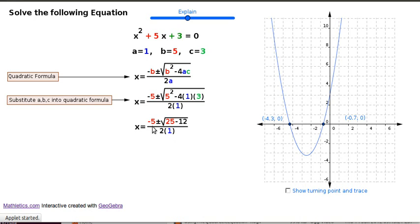And when you work that out, you get these numbers: 5, 25, 12, and 2. That's minus 5 plus or minus the square root of 13, which is 25 minus 12, over 2.